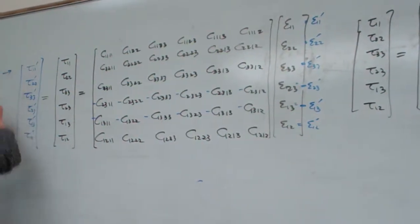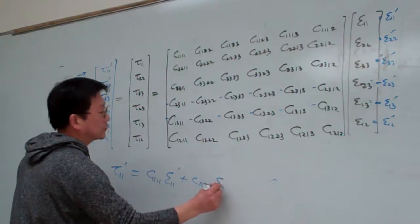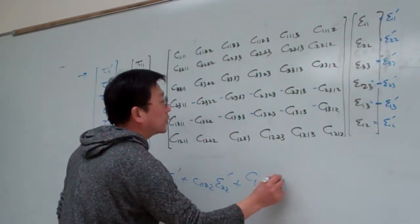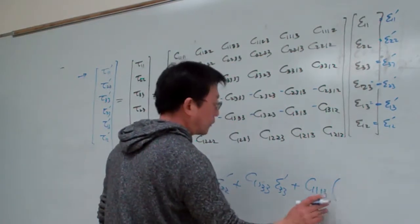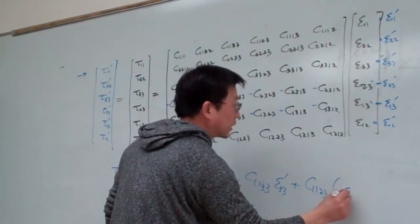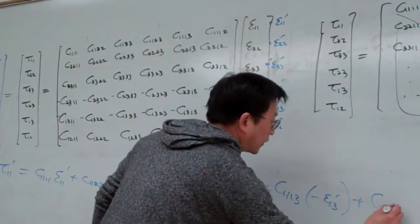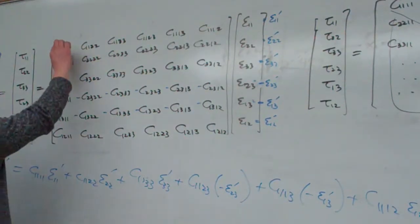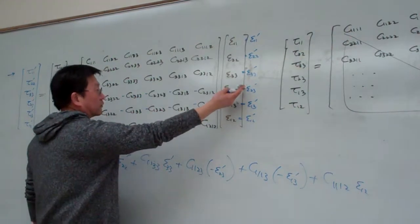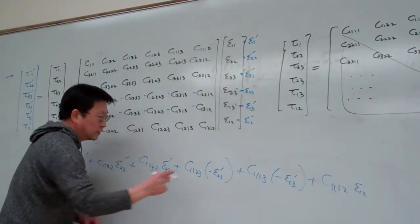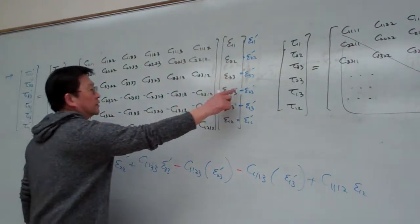Let us try the first row here. We see what happens. The first row expands as basically C 1-1-1-1 epsilon 1-1 prime plus C 1-1-2-2 epsilon 2-2 prime plus C 1-1-2-3 epsilon 3-3 prime plus C 1-1-1-3 — and multiply with this one: minus epsilon 2-3 prime plus C 1-1-1-3 and minus epsilon 1-3 prime plus C 1-1-1-2 and epsilon 1-2 — something like this. Right now I multiply the six elements, expand it like this. So now I want to have a minus sign moving from here into this element. Basically this one is going to here, and this one is going to here, and correspondingly this one is going to here.